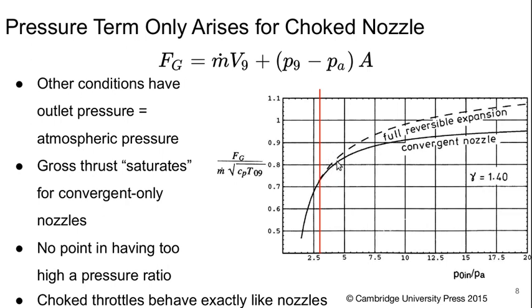I get sort of a diminishing returns. I kind of want to stick in this region, certainly less than four or five where there'd be any kind of difference. Notice this difference between the fully reversible expansion and the superior convergent nozzle. And one thing to keep in mind later when we're dealing with turbines is that choked throttles behave exactly like nozzles because they're still a choked flow. It doesn't matter what the shape and the geometry is.